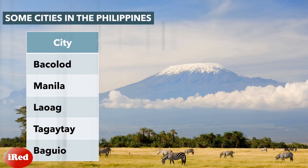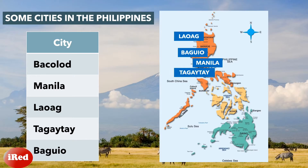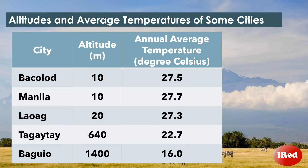Let's consider some major cities here in the Philippines. Can you locate these places on the Philippine map? Laoag, Baguio, Manila, and Tagaytay are located in Luzon, and Bacolod is in Visayas. Let's compare the altitudes and average annual temperatures of these cities.